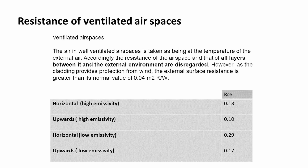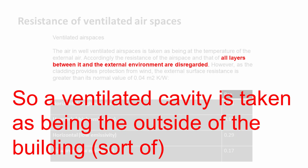There are different resistances for ventilated air spaces. If a design has a cavity within it with horizontal airflow, we would have, depending on the emissivity, a value of 0.13 or 0.29. There is a caveat that all layers between the ventilated airspace and the external environment are disregarded — effectively, a ventilated cavity is taken as being the outside of the building.